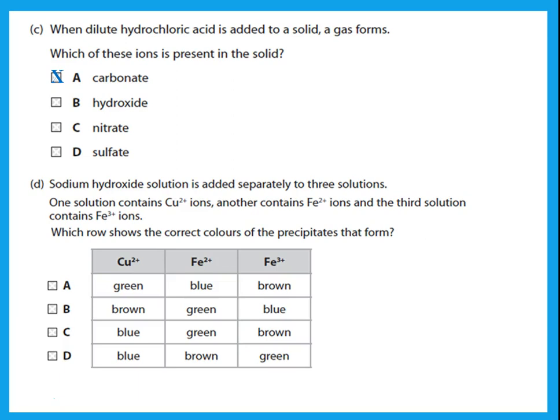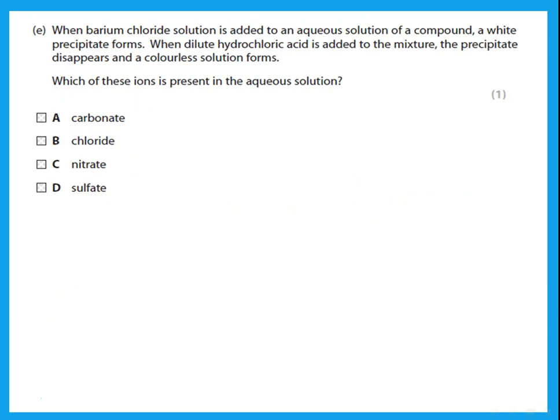Sodium hydroxide solution is added separately to three solutions: one with copper(II), one with iron(II), and one with iron(III). Copper(II) gives a blue precipitate. Iron(II) gives a green precipitate. Iron(III) gives a brown precipitate.